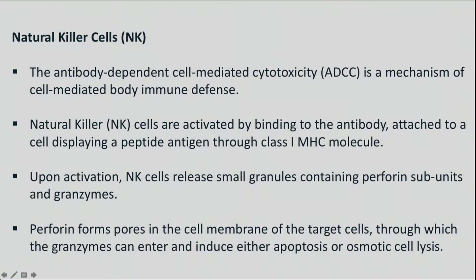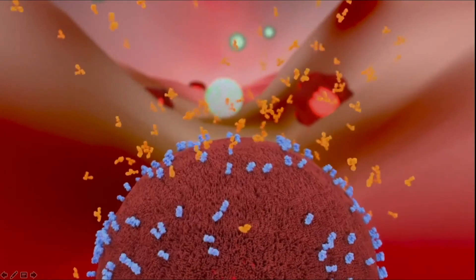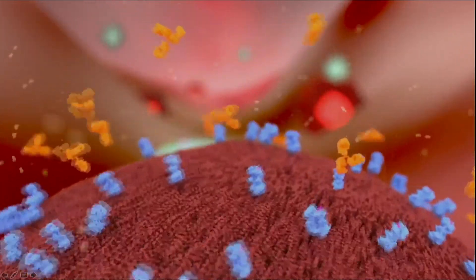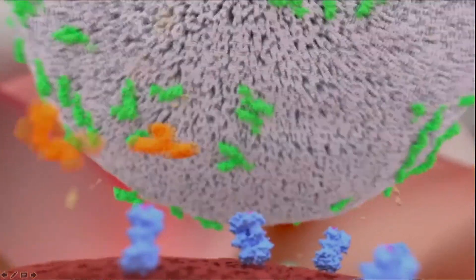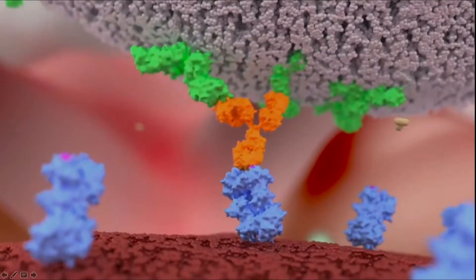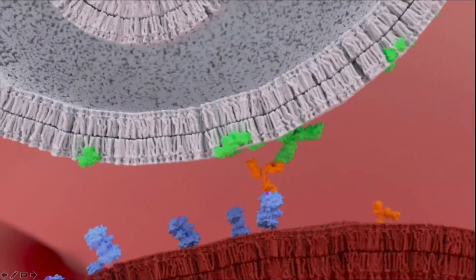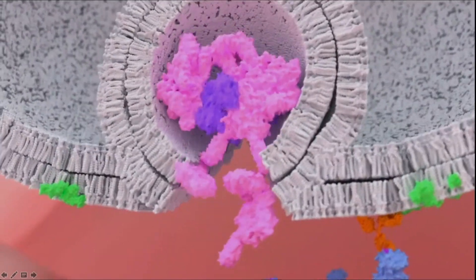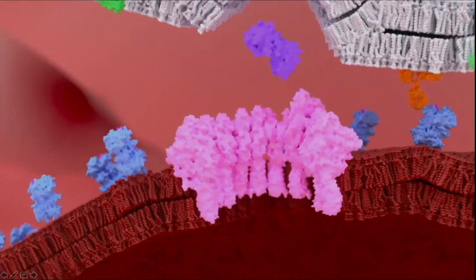There are two ways of killing cancer I'll talk about here. The first is innate to your own immune system: natural killer cells. They go to work every day, killing cancer cells as well as viruses. They're activated by binding to the antibody attached to a cell displaying a peptide antigen through what we call MHC-1. In the animation, that is a cancer cell with antigens expressed on its surface. The natural killer cell binds using a receptor, penetrates the cancer cell wall, and delivers its payload — which is designed to cause apoptosis, the destruction of that cancer cell.